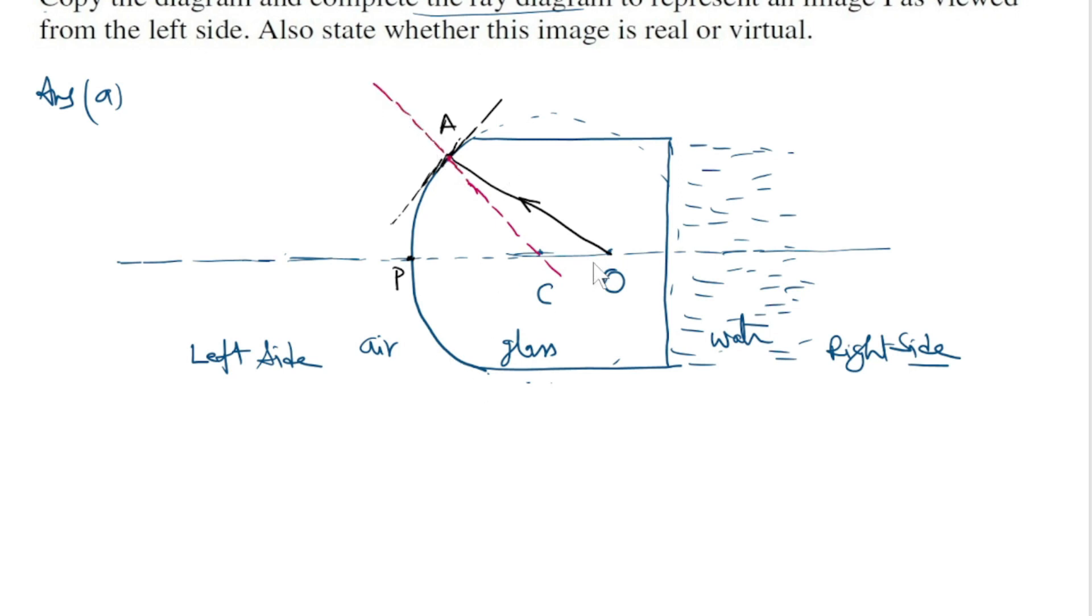Next part. This ray OA is traveling from denser to rarer medium, and hence we expect that it should deviate away from the normal. Thus AB is a refracted ray.